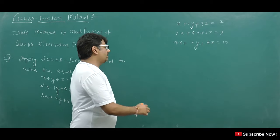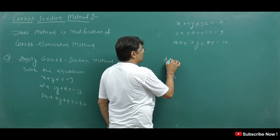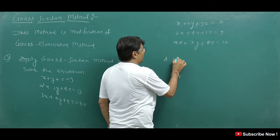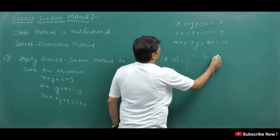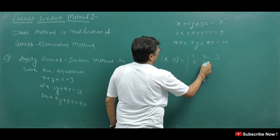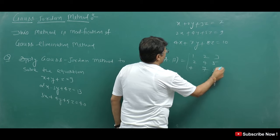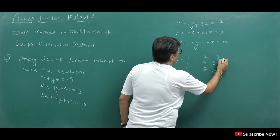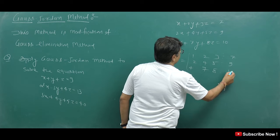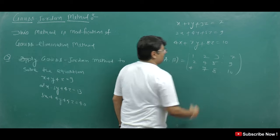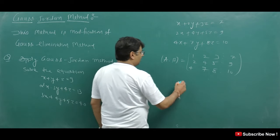We write these equations in matrix form with the coefficient matrix containing 1, 2, 3 in the first row; 2, 4, 5 in the second row; and 4, 7, 8 in the third row. The augmented column has values 7, 9, 10. Then we convert it into upper triangular matrix form using row transformations.